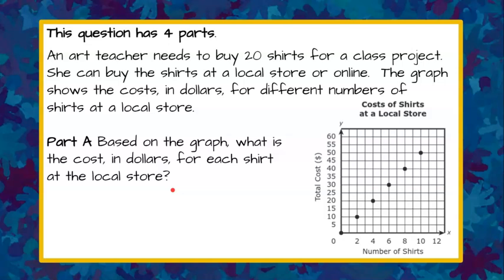Welcome back. We're going to look at our graph and we can see that we have a proportional relationship, so it passes through the origin. We can see that two shirts cost $10. That's a ratio of $10 for two shirts, but we're asked to find the value of one shirt. So 10 divided by 2 is 5, so each shirt costs $5.